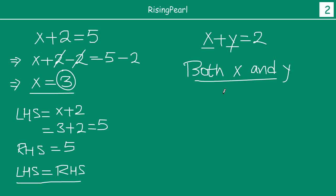Similarly, to say something is not a solution, again we need a combination of values — both values of x and y. So, hypothetically, let us say x is equal to 1 and y is equal to 1 is given to us. Just as we checked whether x equal to 3 was a solution, let us check for x equal to 1 and y equal to 1.